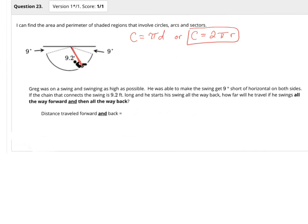So in this case, I want to first figure out what the distance around a full circle is, meaning all the way around if this were a full circle. I want to figure out what that total distance is first. So my circumference is going to equal 2 times pi times my radius of 9.2 feet.